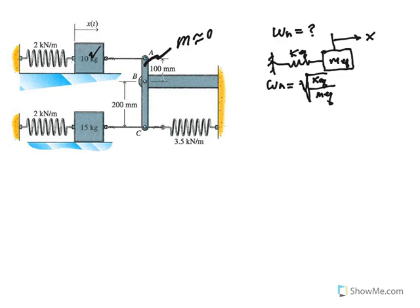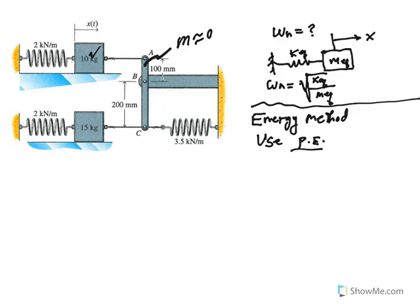So how could I find these mass equivalent and K equivalent? There are different ways that you could do this, but one way would be the energy method. To find the equivalent spring constant, we use potential energy.